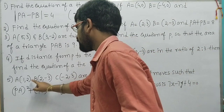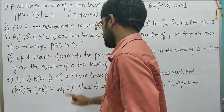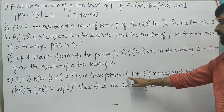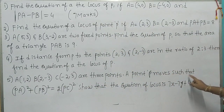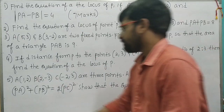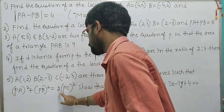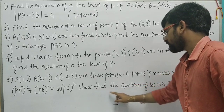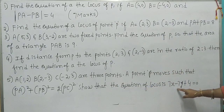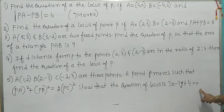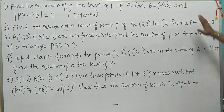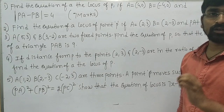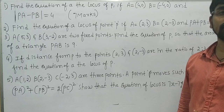A is (1,2), B is (2,-3), C is (-2,3) — 3 points. A point P moves such that PA² + PB² equals 2PC². The equation of the locus is 7x minus 7y plus 4 equals 0. We will get the solution here — the description link is there; make it easy and subscribe.